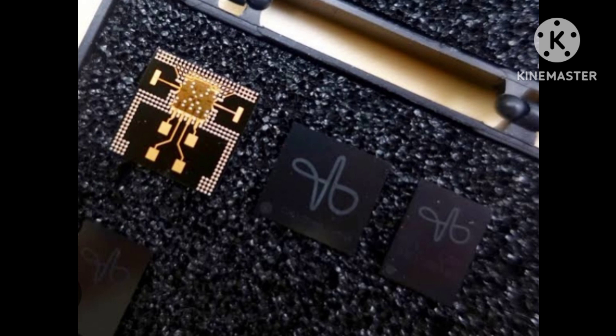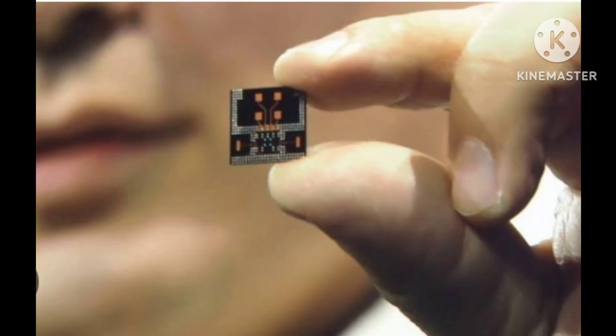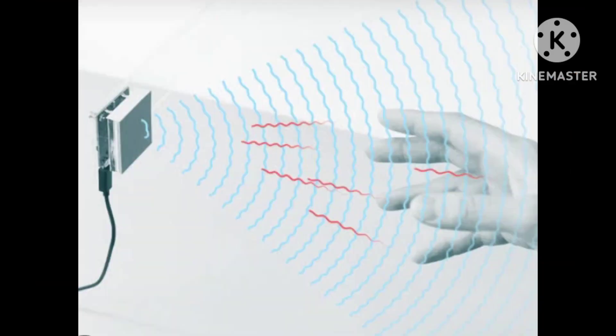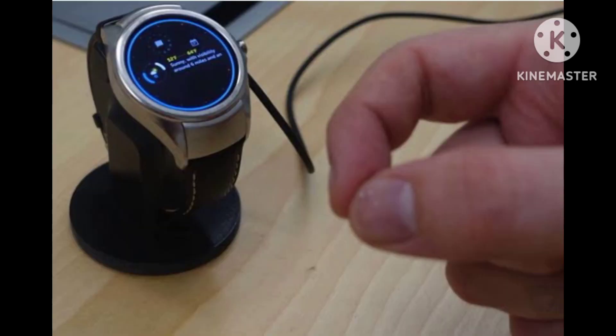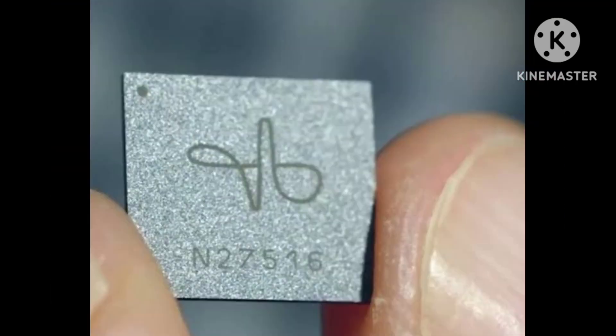In conclusion, Google's tiny radar system, Soli, is an innovative technology that allows for intuitive and natural interaction with devices. Soli's ability to detect sub-millimeter movements in the air and work through materials makes it ideal for use in a wide range of devices, from smartwatches to car dashboards. With Soli, users can interact with their devices in a more intuitive and natural way, making technology more accessible to everyone. Thank you very much for being with us.